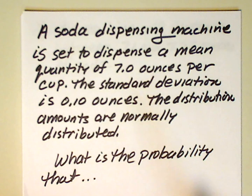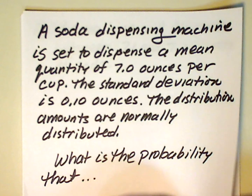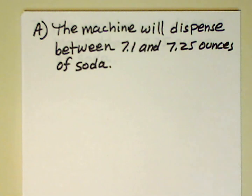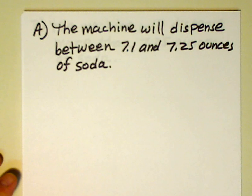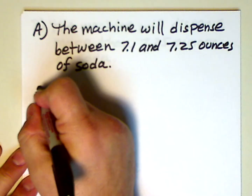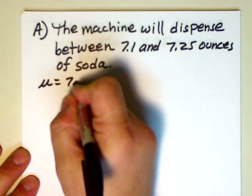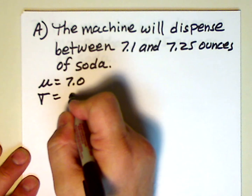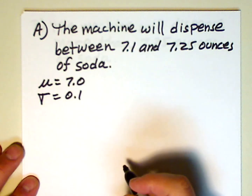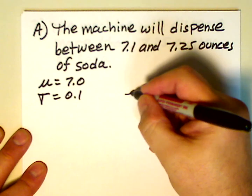Here's the problem. The dispensing machine is set to dispense a mean quantity of seven ounces per cup. Standard deviation is 0.1 ounces. The distribution amounts are normally distributed, and the question asks: what is the probability in Part A the machine will dispense between 7.1 and 7.25 ounces of soda? We know that the mean is 7 ounces and the standard deviation is 0.1 ounce. Let's take a look at the picture.